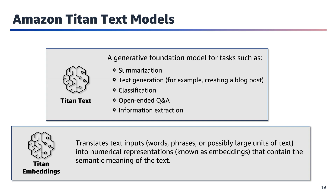The Amazon Titan text models are LLMs capable of performing a wide range of natural language tasks. These include summarization, where the model can condense lengthy text into concise summaries; text generation for creating content like blog posts; classification of text into predefined categories; open-ended question answering to provide relevant information; and information extraction to identify and extract key details from text. Complementing the Titan text models are the Titan embeddings models, which translate text inputs of varying lengths into numerical representations called embeddings. These embeddings capture the semantic meaning of the text, enabling efficient processing and analysis by downstream applications and models.